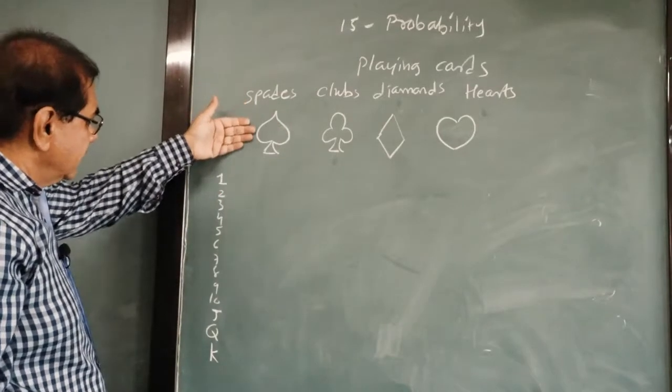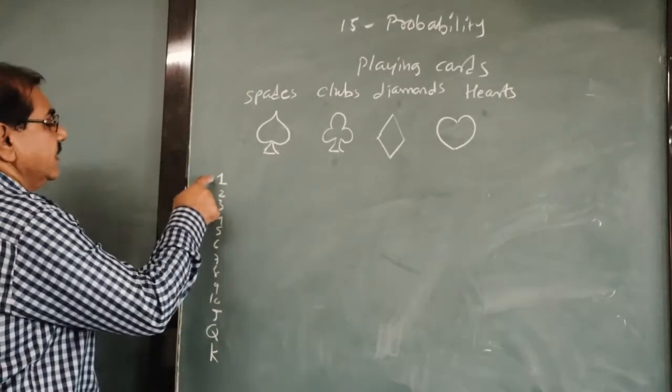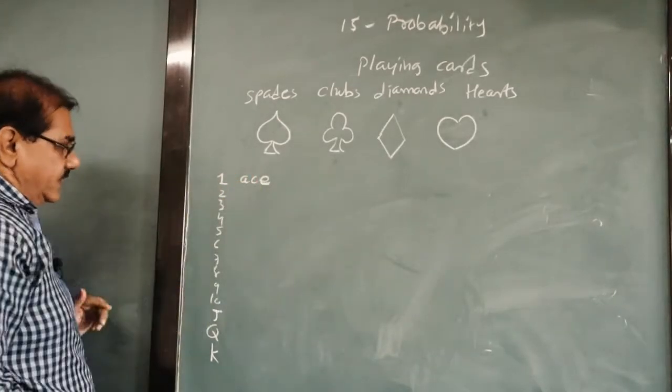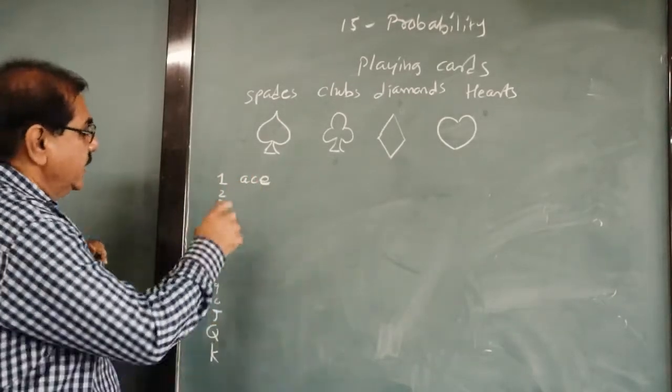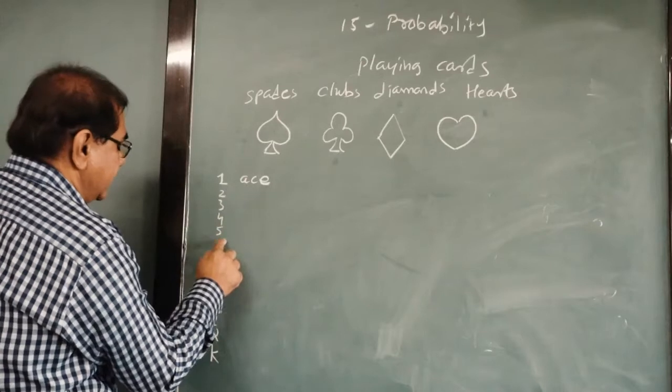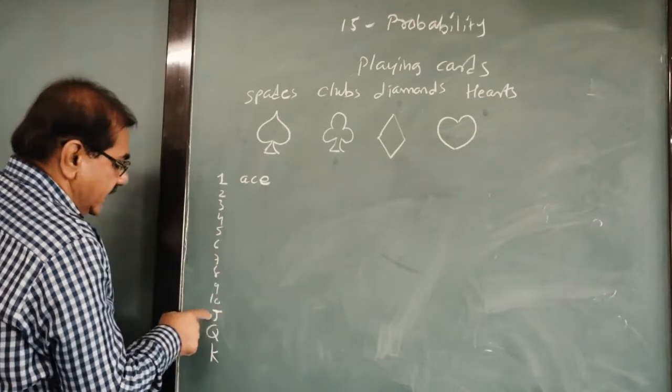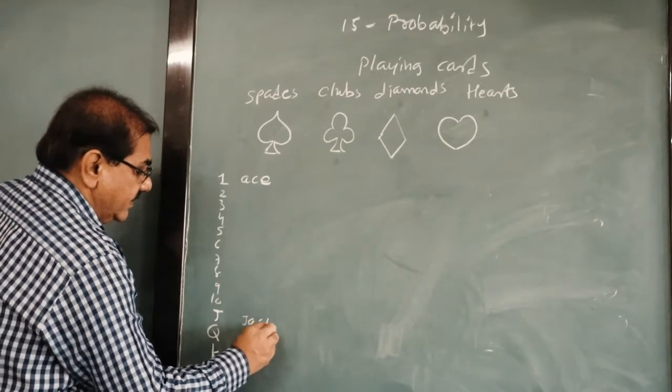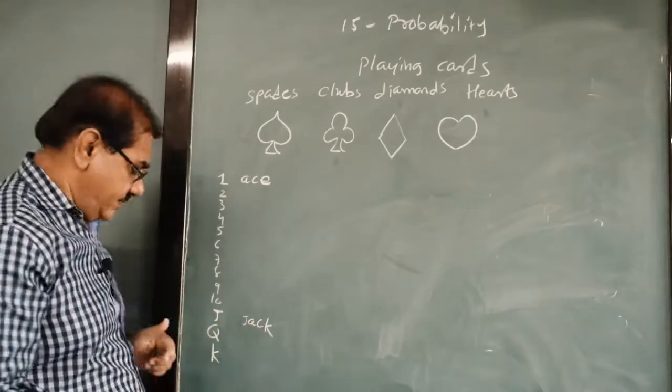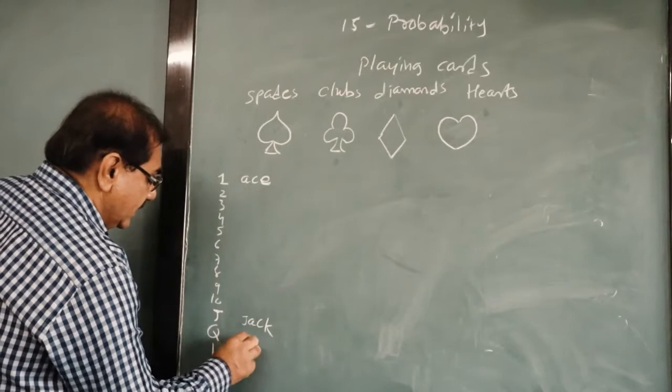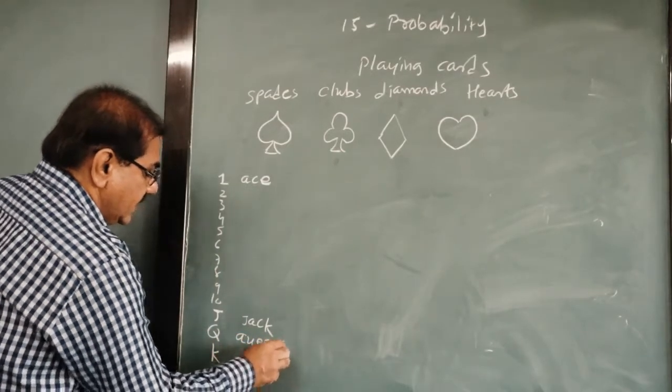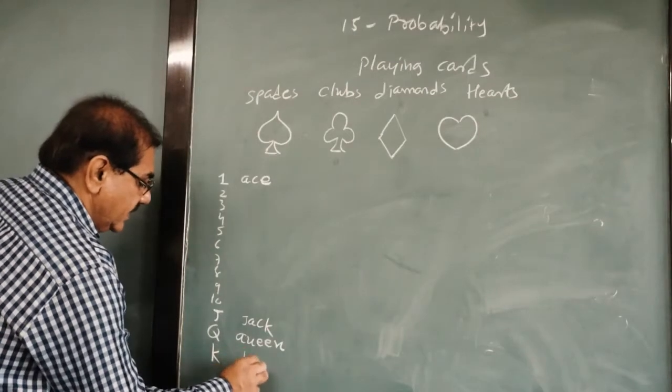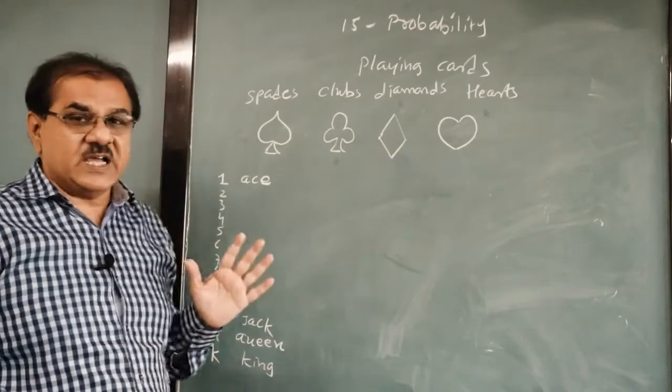Now in each type of the card, one is called ace. Echo in Gujarati we say. Then 2, 3, 4, 5, 6, 7, 8, 9, 10. 11 we don't write, it is called jack. In Gujarati we call gulam. Q means queen, rani. And K means king, we call it raja or batsa.